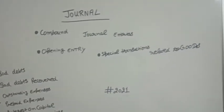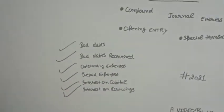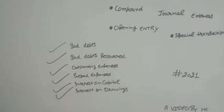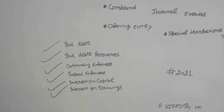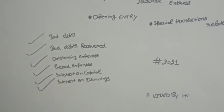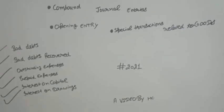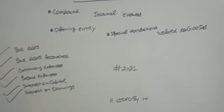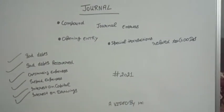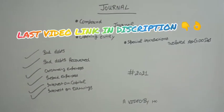We will cover special transactions related to goods, bad debts, bad debts recovered, outstanding expenses, prepaid expenses, interest on capital, and interest on drawings for 2021.